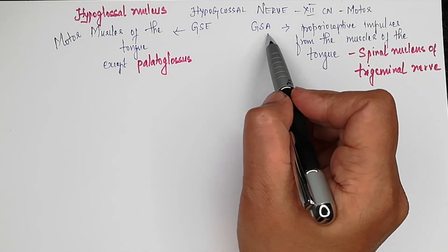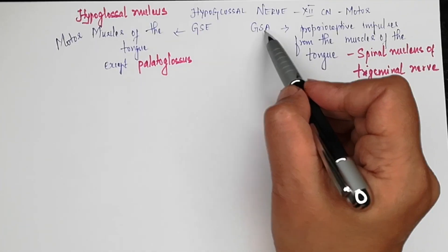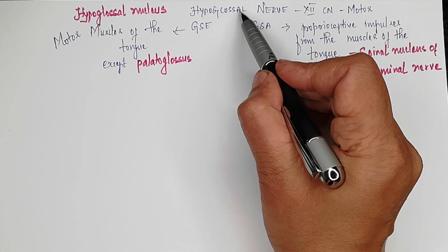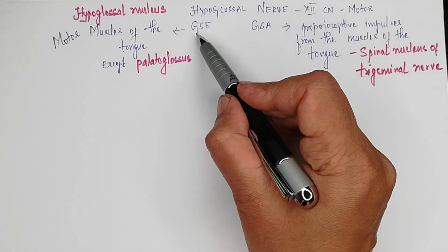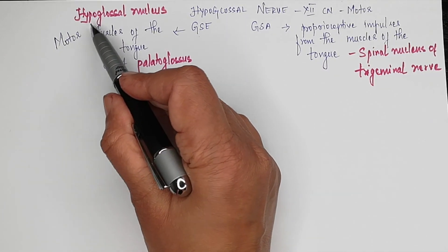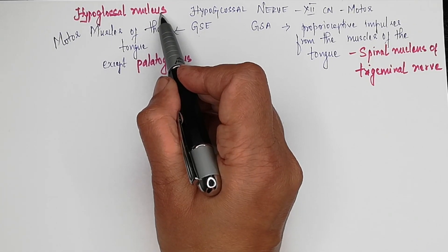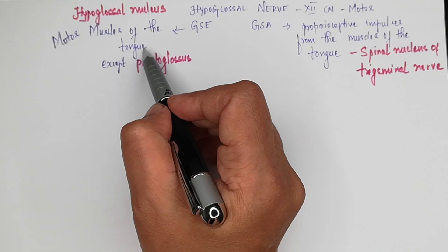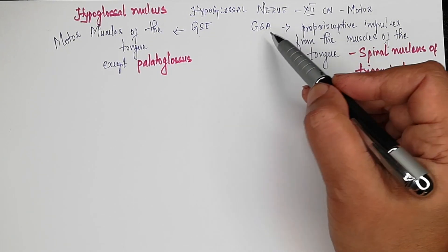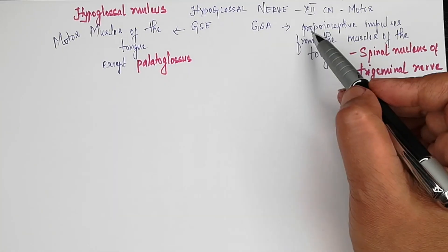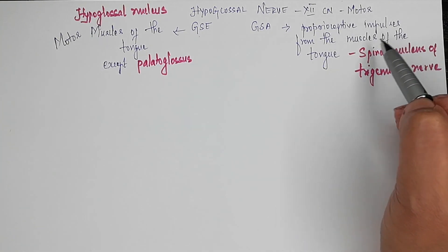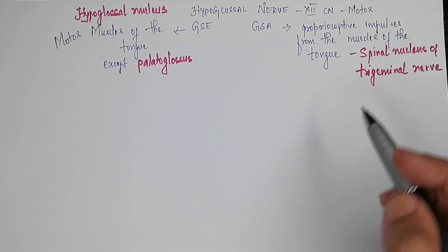The hypoglossal nerve has two components: general somatic efferent and general somatic afferent. Hypoglossal means it lies under the tongue, which is why it is called hypo. The general somatic efferent component lies in the hypoglossal nucleus in the medulla oblongata and is motor to the muscles of the tongue except the palatoglossus. The general somatic afferent component carries proprioceptive impulses from the muscles of the tongue to the spinal nucleus of the trigeminal nerve.